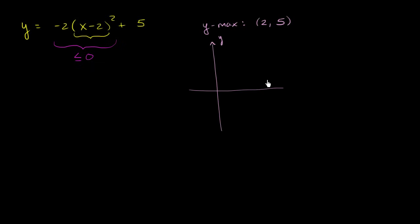So that's my y-axis. This is my x-axis. So this is 1, 2, 1, 2, 3, 4, 5. So this right over here is a point 2 comma 5.